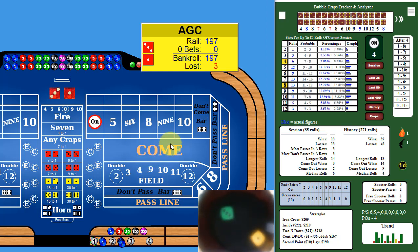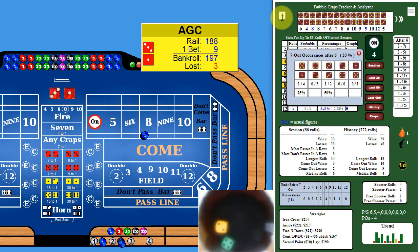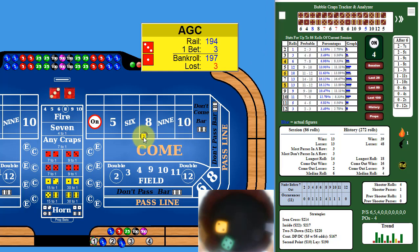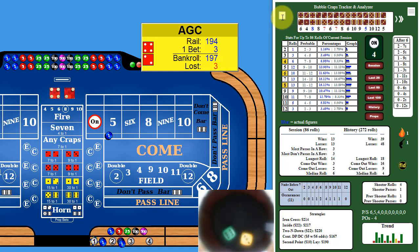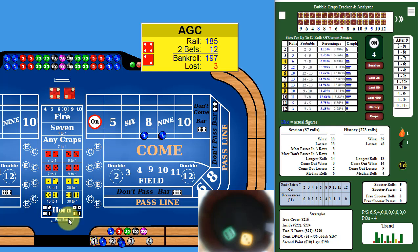Three-one-four — after four we have eights and sevens, so nine dollars on the eight. Four-two-six — sevens and fives for the six, so I'm going to put just three on the five because seven's the top number. Six-three-nine! After that, nines and eights: nine dollars on the nine, three dollars on the eight, take away the five.